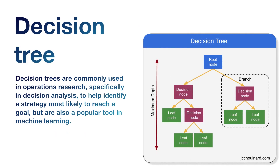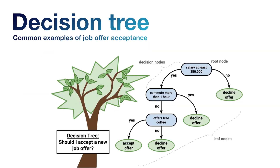Decision trees are commonly used in operations research, particularly to find cause-and-effect problems — for example, can I do this first operation to save cost, a second operation to save material, or a third to save manpower? It helps identify the strategy most likely to reach a goal. Decision trees are also a popular tool in machine learning for very complex decision-making processes.